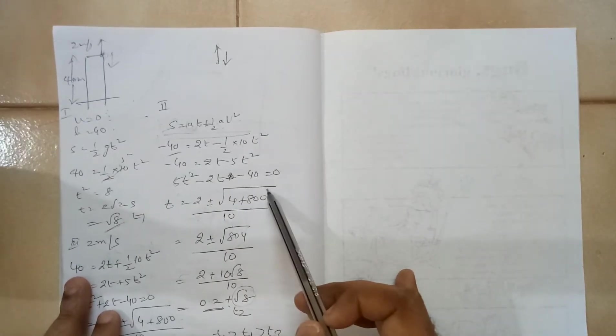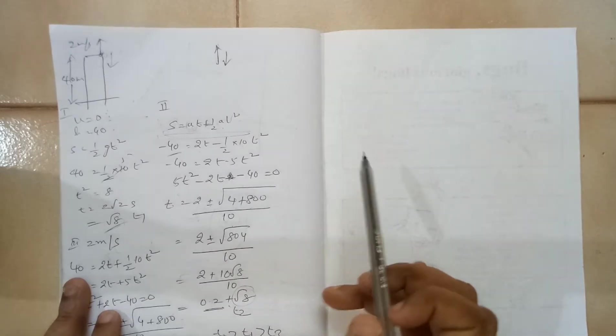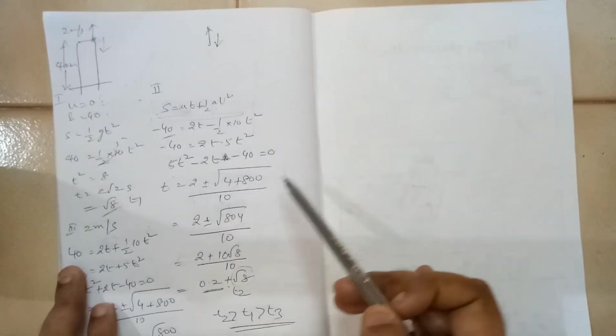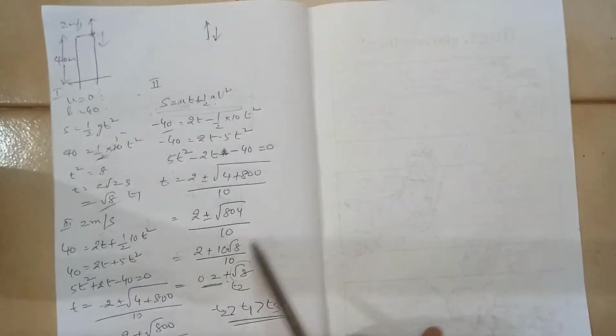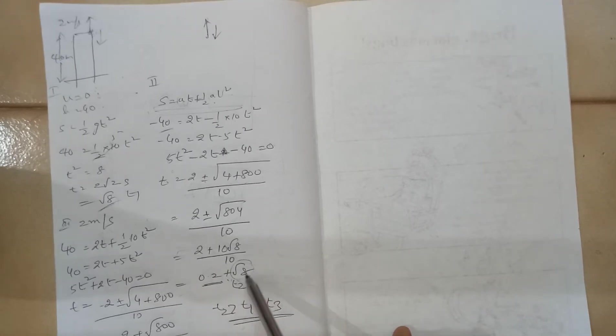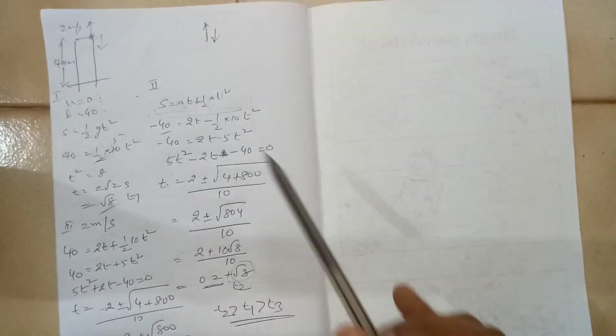So there are two roots here. So obviously root 804 is bigger than 2. So you will get a negative value and a positive value. The time cannot be a negative value. So we are taking only the positive value. So if you calculate the positive value, you will get 0.2 plus root 8 seconds.